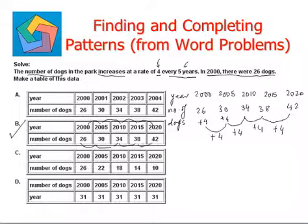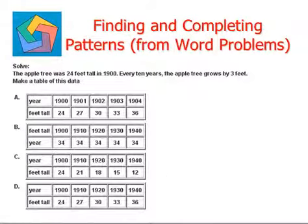So B is the correct answer. For better understanding, let's look at the next question. The apple tree was 24 feet tall in 1900. Every 10 years, the apple tree grows by three feet.